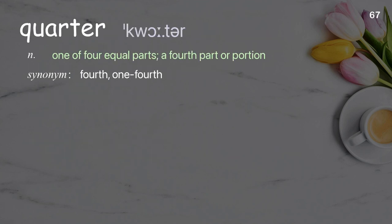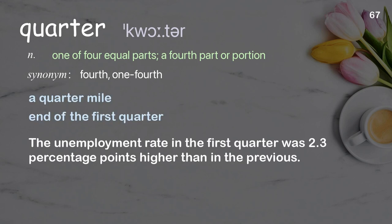Quarter: One of four equal parts; a fourth part or portion. Examples: a quarter mile, end of the first quarter. The unemployment rate in the first quarter was 2.3 percentage points higher than in the previous.